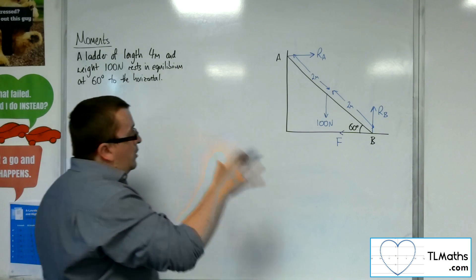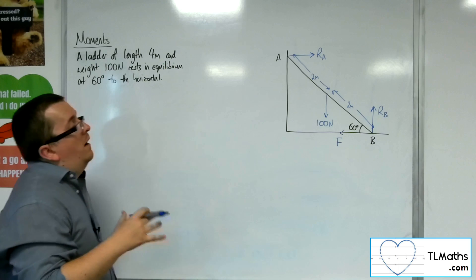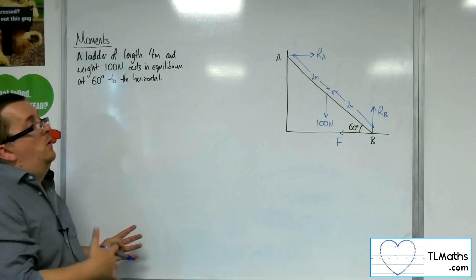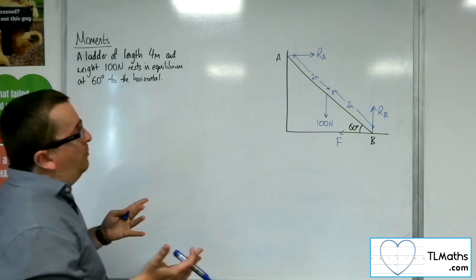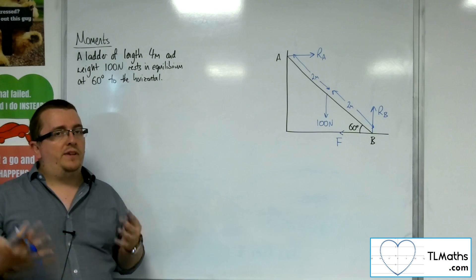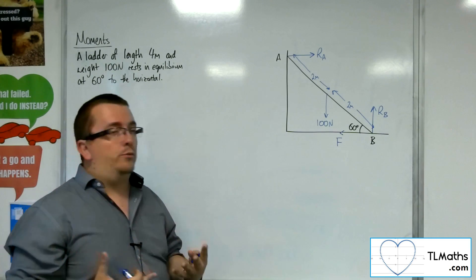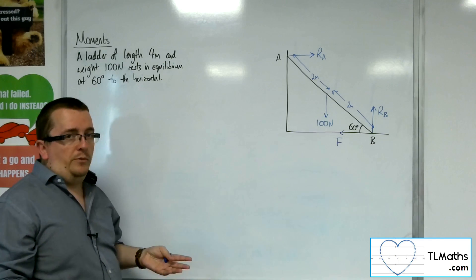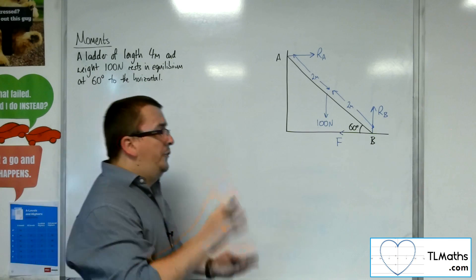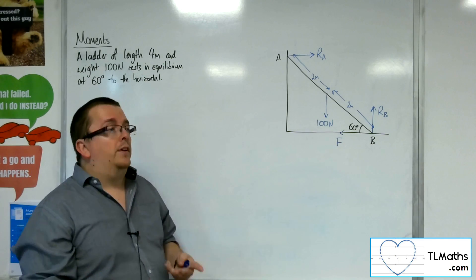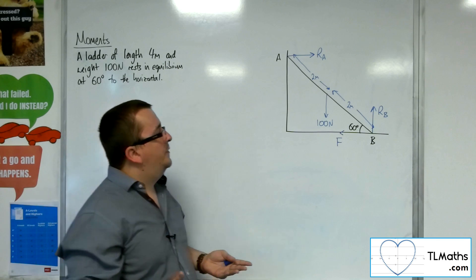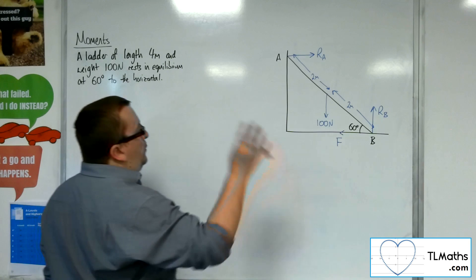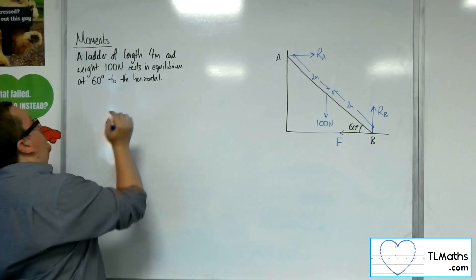So the question's likely going to be asking us to find the friction and the normal reaction forces. Now, because in this problem we don't know whether we're in limiting equilibrium, we can't use that F is equal to mu times R. And so that means that we're going to have to use moments to get around that problem.